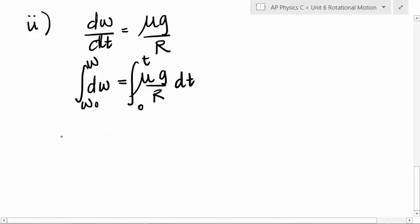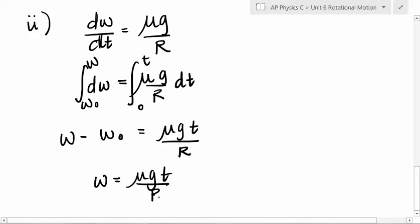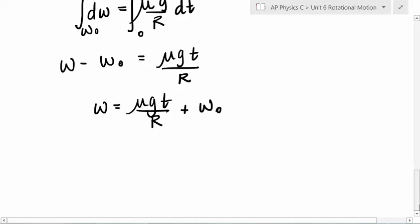I think omega naught for that rough spot is 0 because it wasn't rotating, and then it starts rotating. So I think that's going to be 0 in a minute. But that would be omega minus omega naught is equal to what? Mu g t over R. So then omega is equal to mu g t over R plus omega naught. That's it. That's not hard. You can do this. You are smart.